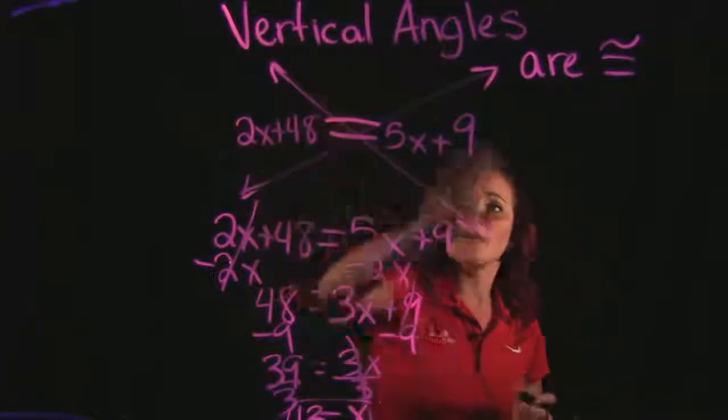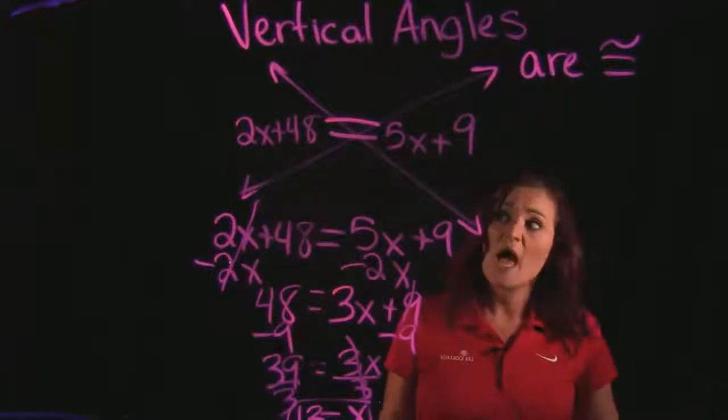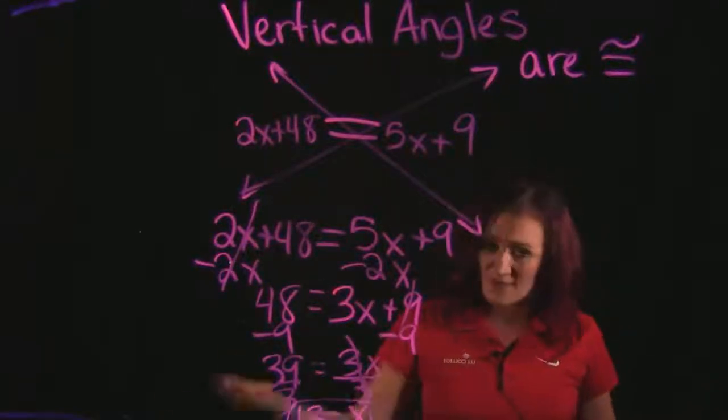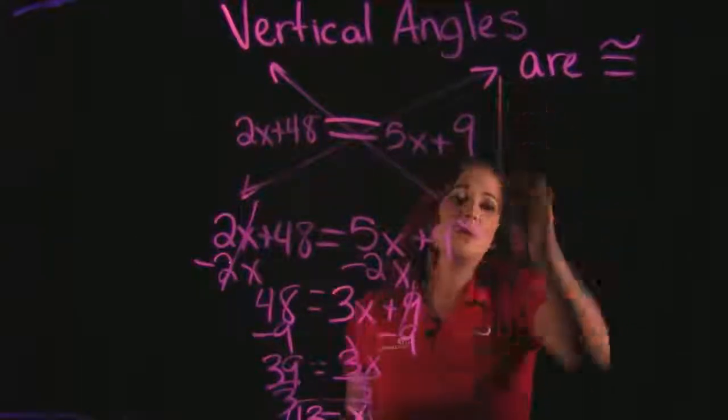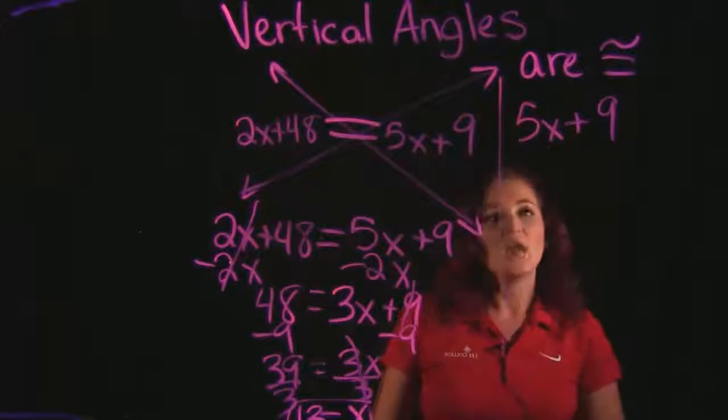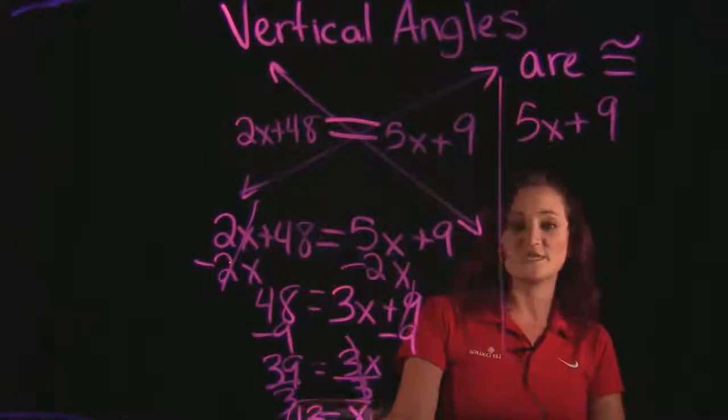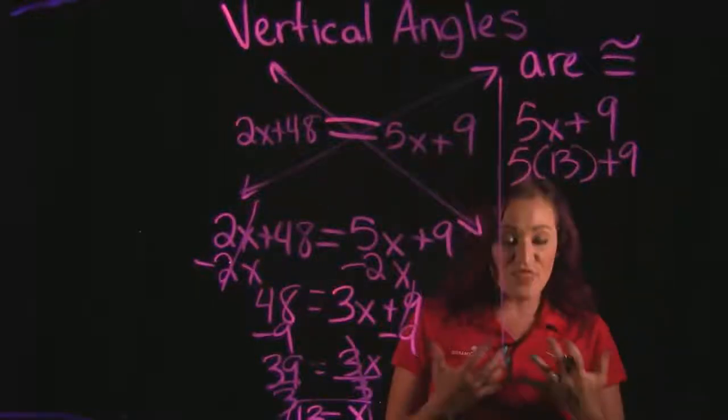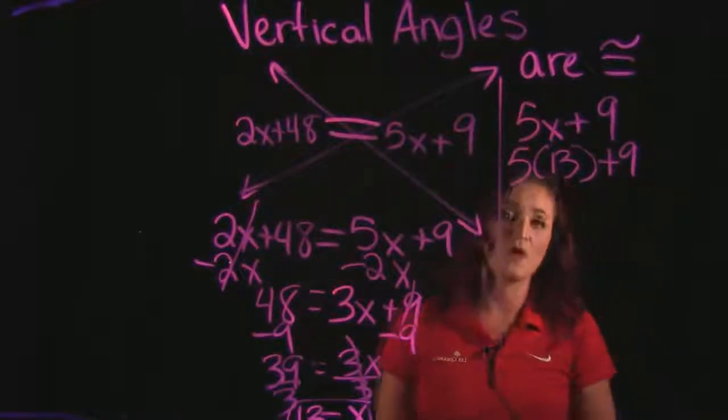It does not matter which one you pick. I normally just go with ones that have smaller numbers or that maybe are positive instead of negative. So I'm going to choose 5x plus 9. And what I'm going to do is I'm going to take this 13 and plug it in for x and simplify this and that will give me the measure of the angle.